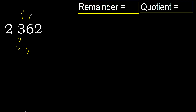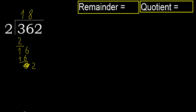2 multiplied by 8 is 16. 16 is not greater. Subtract: 16 minus 16 is 0. Next, eliminate 0 on this side. 2 multiplied by 1 is 2.